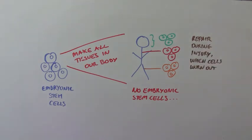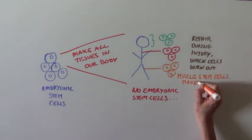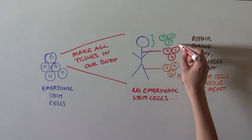For example, a muscle stem cell can only produce a muscle cell, not a heart cell. That's the job of the cardiac stem cells.